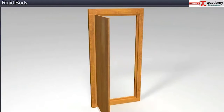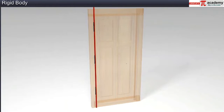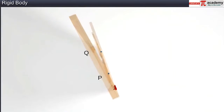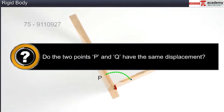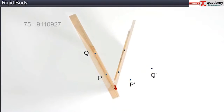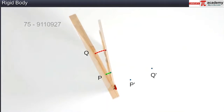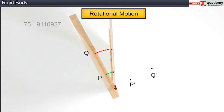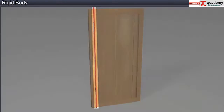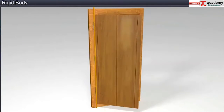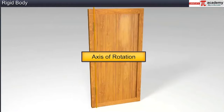Let us consider another rigid body — a door. Mark two points P and Q on the door and observe their motions as the door is opened or closed. When the door is in motion, do the two points P and Q have the same displacement? Their displacements are not equal. Hence, the motion of the door is not translational. This is known as rotational motion of a rigid body. The door is fixed to a line passing through the hinges, and this fixed line about which a rigid body rotates is called the axis of rotation.